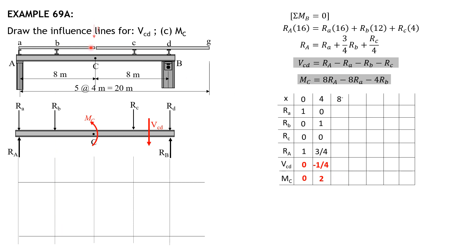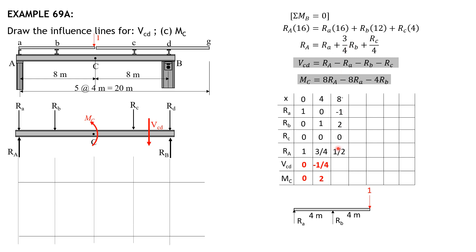When x is 8 just to the left, the unit load is just left of C. From the free body diagram, summation of moment about B equals 0: R_A times 4 plus 1 times 4 equals 0, so r sub small a is negative 1. Then summation of moment about A: r sub small b times 4 equals 1 times 8, so r sub small b is 2. R sub small c is 0. Therefore R sub A is negative 1 plus three-fourths of 2 equals 0.5, i.e., one-half.